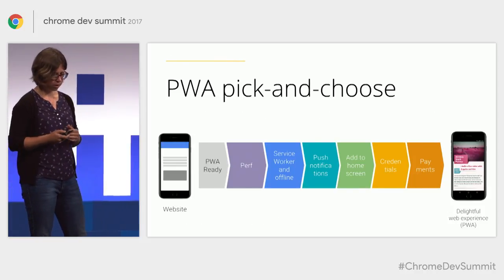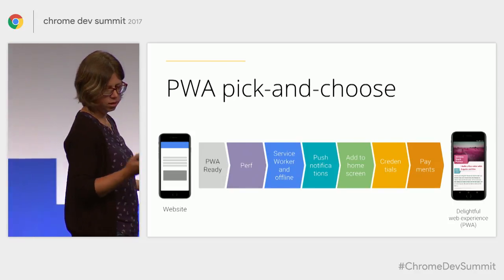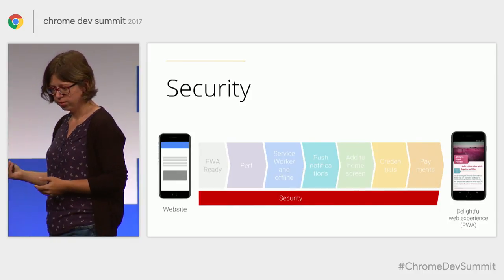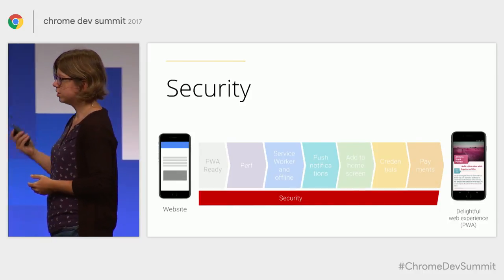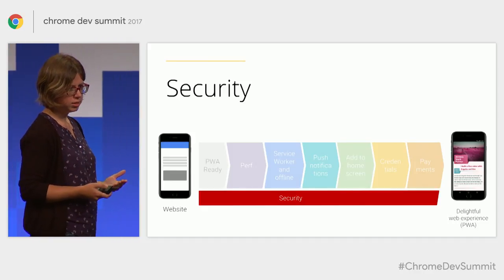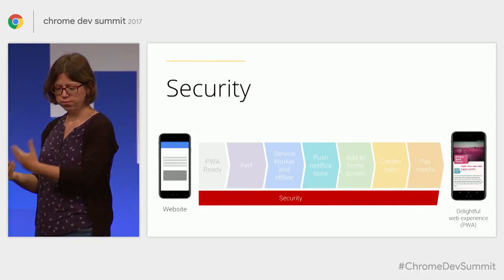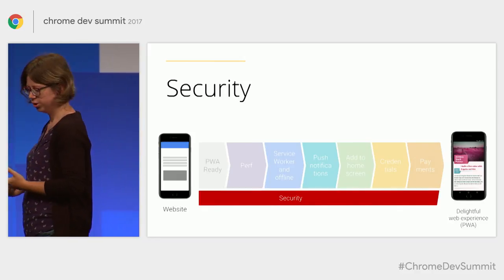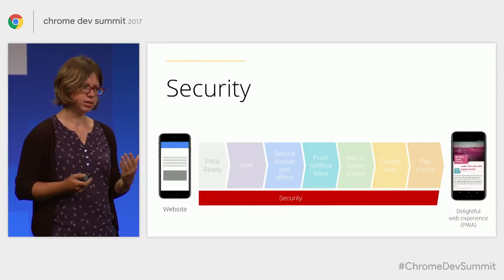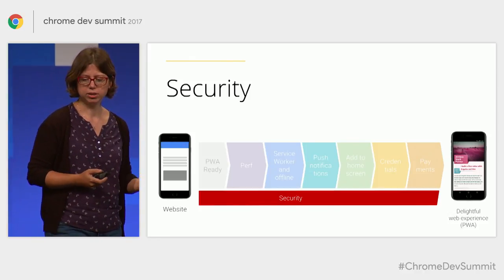So let's say we are PWA ready. What do we focus on next? Well, the next thing you need to ensure is safety. And in our context, safety means HTTPS. Many new and powerful web APIs actually take it as a requirement that you serve your website from a secure origin. Thanks to HTTPS, the user can trust that the site is actually you, that there is no phishing happening, no scammer between you and the site, and they know that nobody is listening on the interaction with your site.